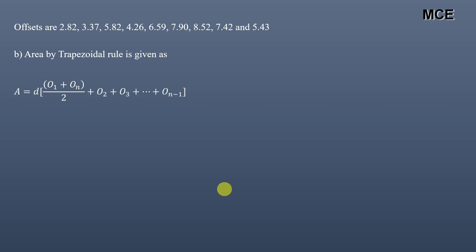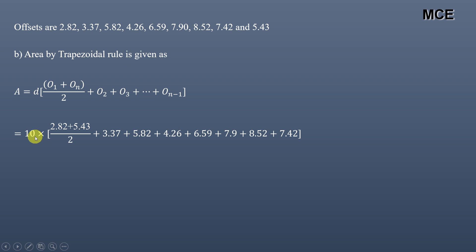Next, we find the area using the trapezoidal rule. The formula is: d × [(O₁ + Oₙ) / 2 + sum of remaining offsets]. The distance d = 10 meters, first offset = 2.82, last offset = 5.43. So: 10 × [(2.82 + 5.43) / 2 + (3.37 + 5.82 + 4.26 + 6.59 + 7.90 + 8.52 + 7.42)] = 480.05 square meters.